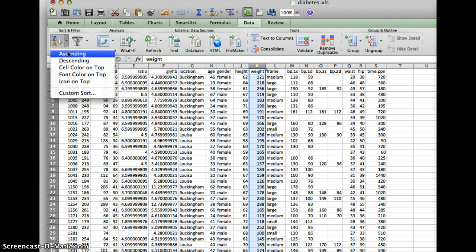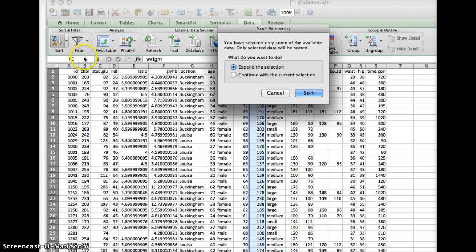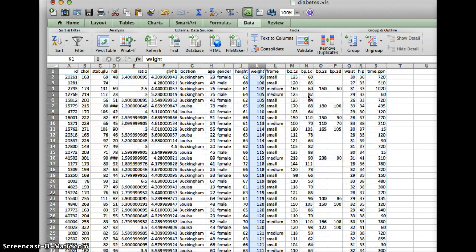We want to sort it ascending. It's going to give us a choice, either to continue with the current selection or expand the selection. I'm going to expand the selection. It'll move all of the numbers so that we maintain the integrity of the dataset. We're just switching the order with which it's presented.